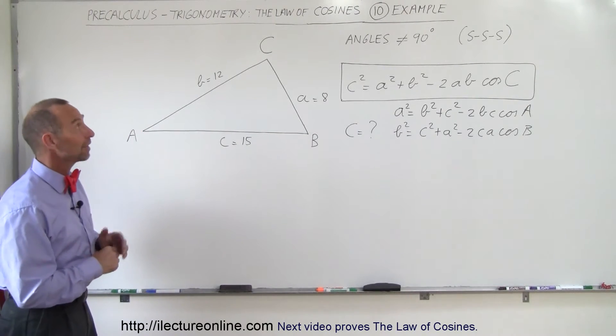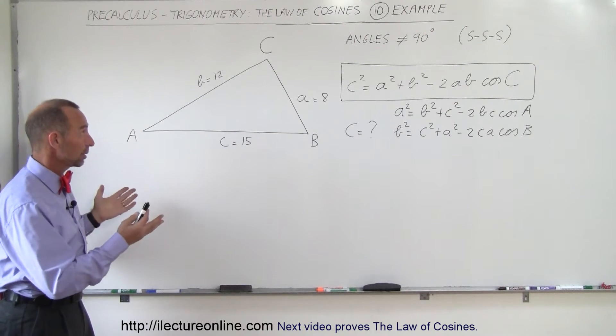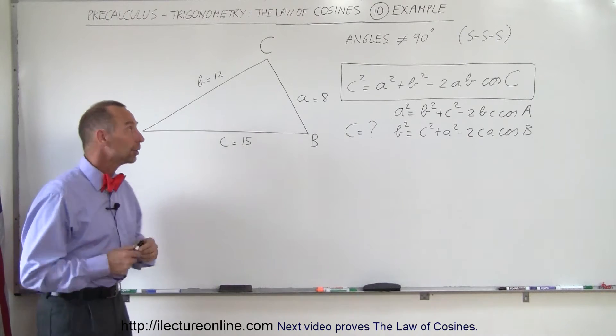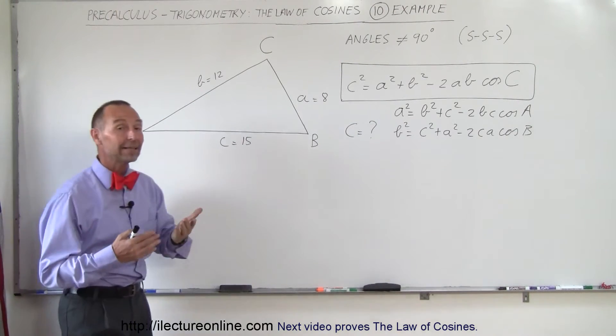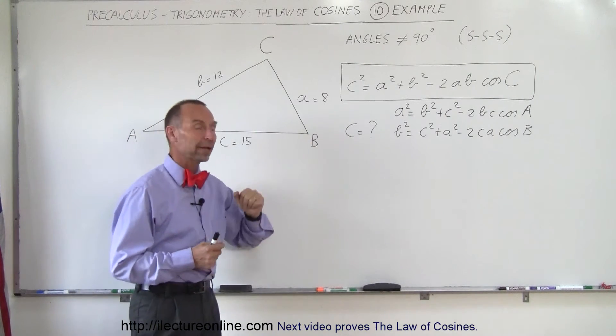Welcome to I Lecture Online. We have an example for you. We have a triangle here where none of the angles are 90 degrees. We know the three sides A, B and C, and we're trying to find the angle, let's say angle C right here.